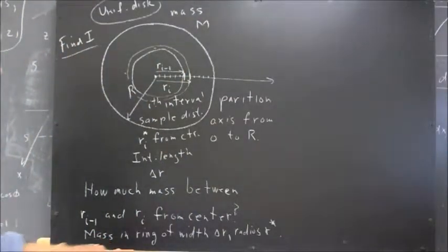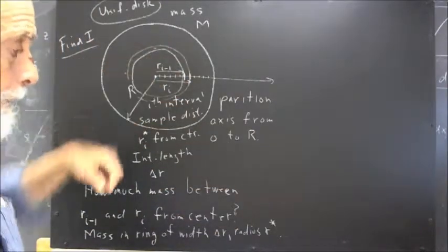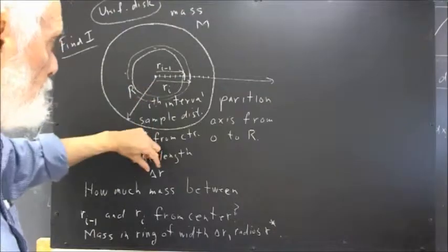Okay, we could have used the word thin, a thin ring of this radius, R star. Now, of course, the radius varies a little bit from here to here, but we're considering delta R to be small.